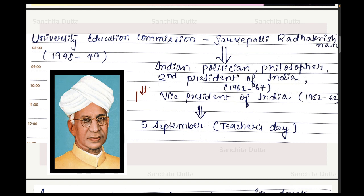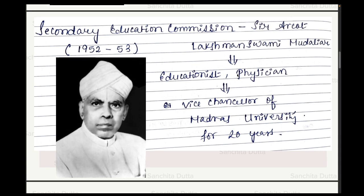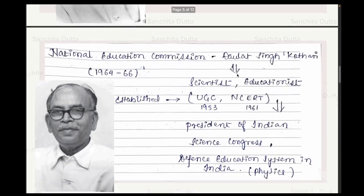Remember: University Education Commission 1948-49 was the very first education commission of independent India. The second education commission — the Secondary Education Commission — had Sir Arcott Lakshman Swami Mudaliar as its chairman. His full name was Arcott Lakshman Swami Mudaliar. This commission came in 1952-53. It was a very important commission that described in detail what should happen in secondary education. He was an educationist, physician, and also Vice Chancellor of Madras University for almost 20 years.